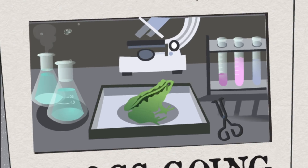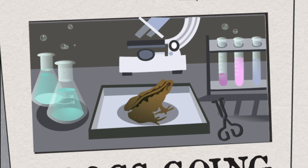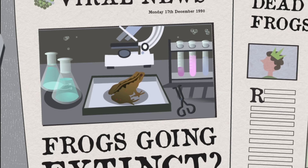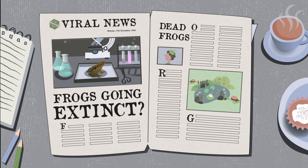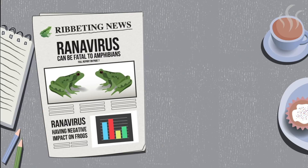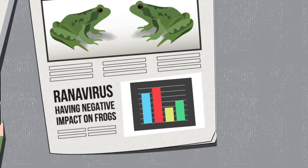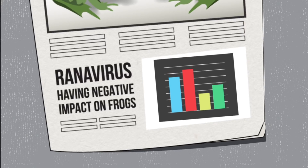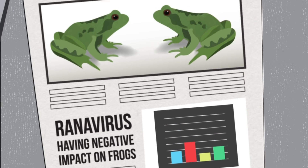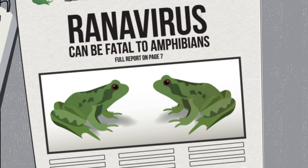In around 1990, people in England began to notice groups of frogs suffering from a disease. An investigation confirmed that this disease was caused by viruses known as ranaviruses. These viruses were introduced to the UK from overseas and have had a major negative impact on frog populations.